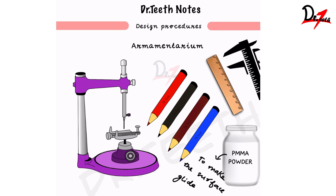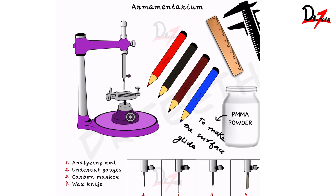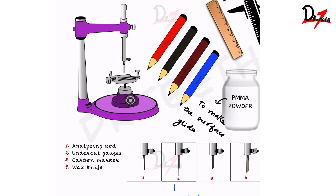Let's start with the armamentarium — what all do we require. Obviously a surveyor is what we require, and we need a few colored pencils: red, black, brown, and blue. We'll see what color is needed for which purpose. We also need a ruler, a caliper for precise measurements, and PMMA powder — polymethyl methacrylate powder. We need PMMA powder to make the surface glide; we apply it so the cast glides effortlessly on the surveyor surface.